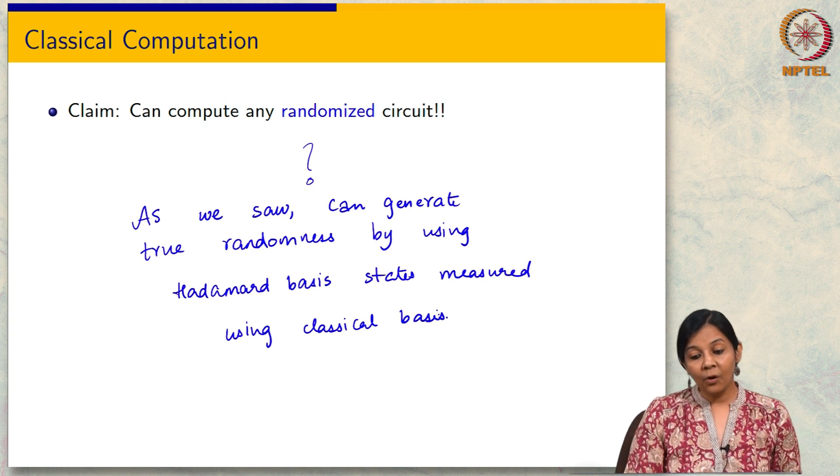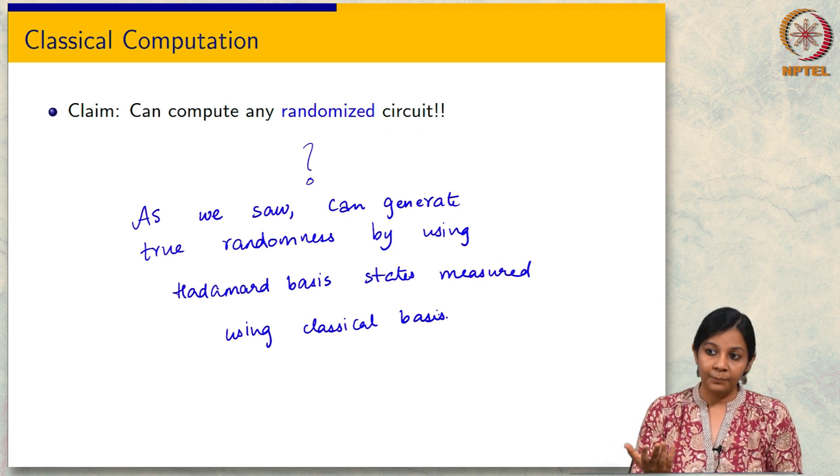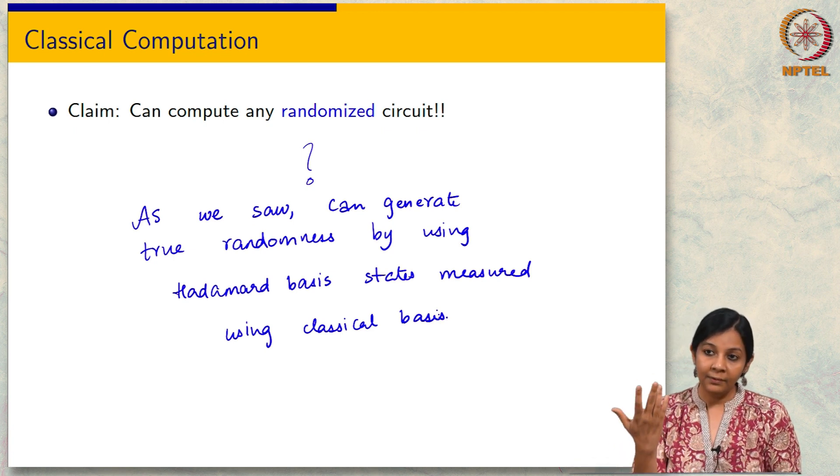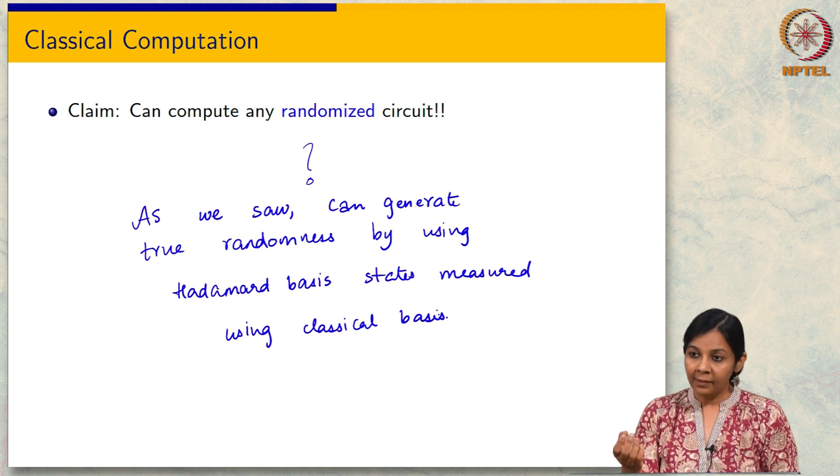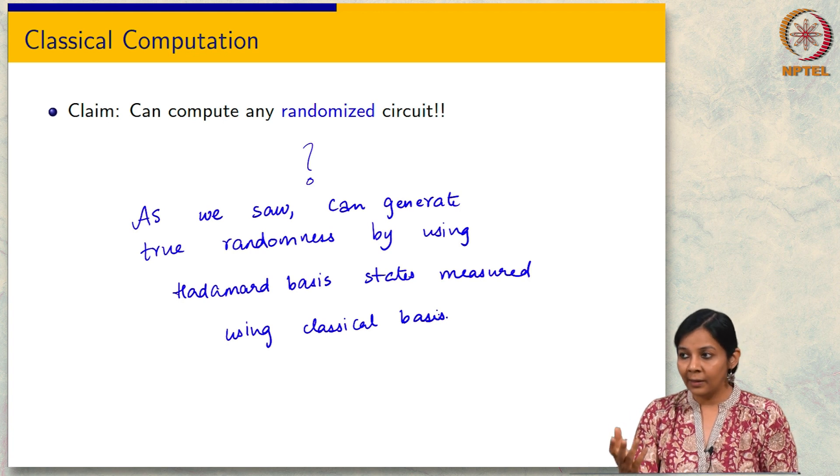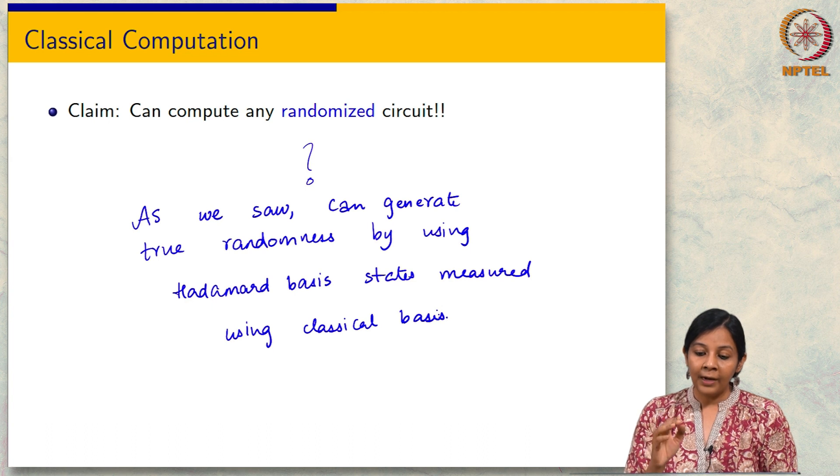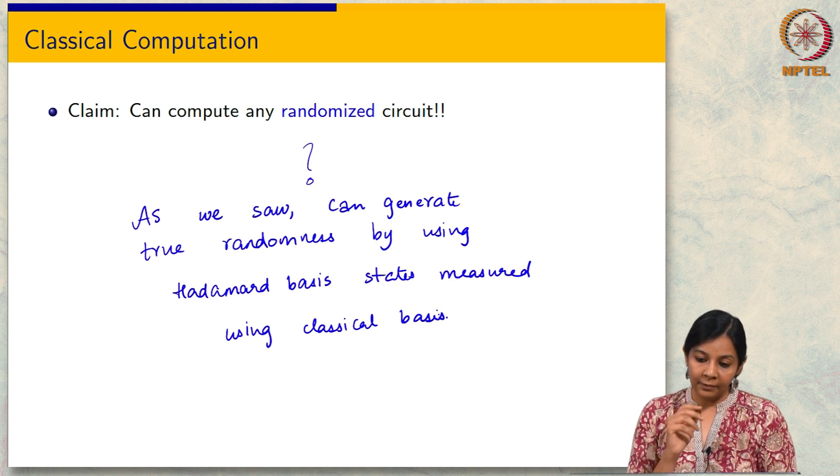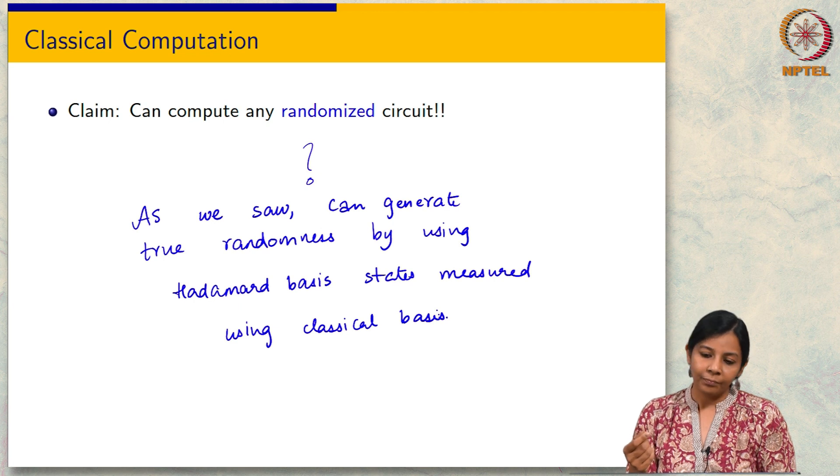The question is isn't this already better? I was saying that we have captured classical computation and what he is pointing out is that in fact, we are doing better because in classical computation we do not actually have true randomness. We typically use pseudo random generators and things like that to get random bits. Whereas, here it appears that you are getting an unlimited supply of truly random bits. So, yeah it does seem already like an improvement.